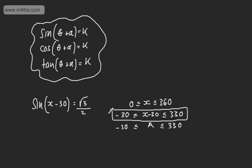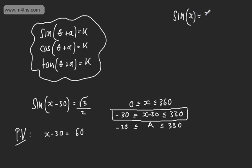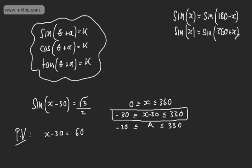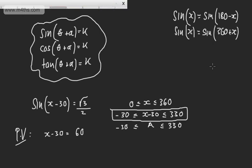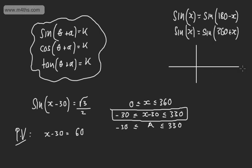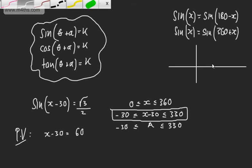Let's find a principal value for x minus 30. This is one of our special angles, so we can write: x minus 30 equals the inverse sine of root 3 over 2, which gives us 60 degrees. Now let's consider the sine function. We know sine x equals sine of 180 minus x, and also sine of x equals sine of 360 plus x.